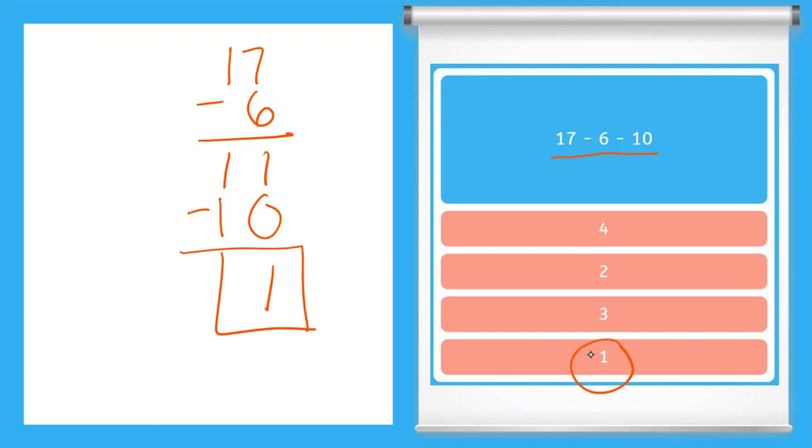Now let me show you another way you could do it. Since we are taking both 6 and 10 away from the 17, what we could do is add 6 and 10 together and then take that answer away from 17. So let's try that. What is 6 plus 10?